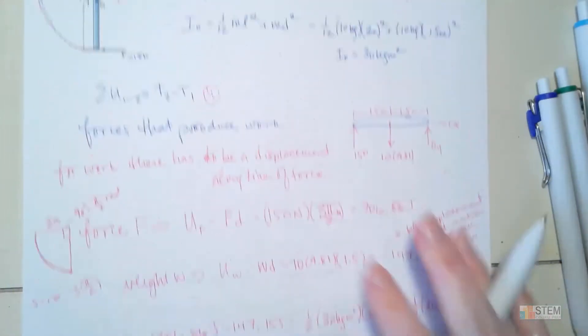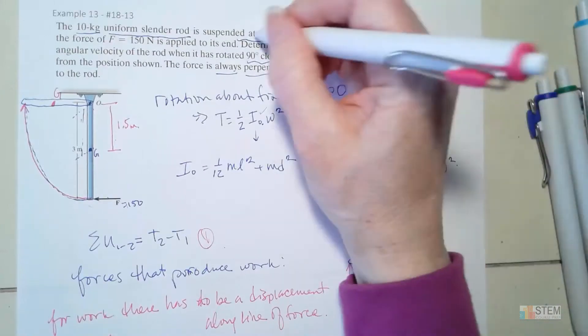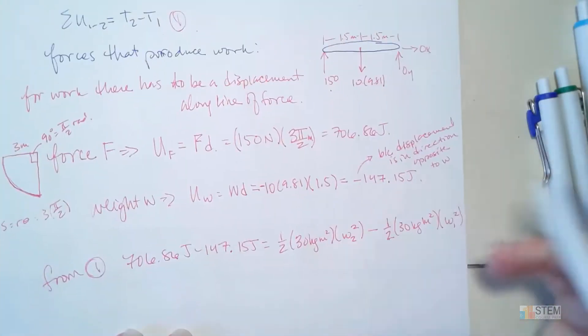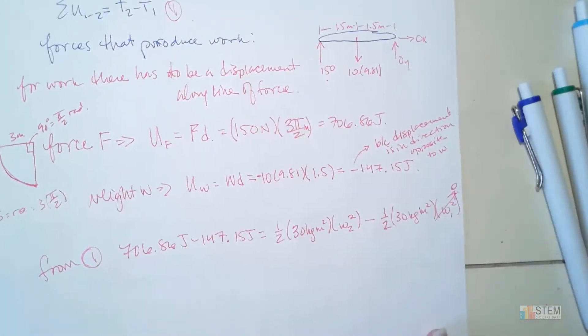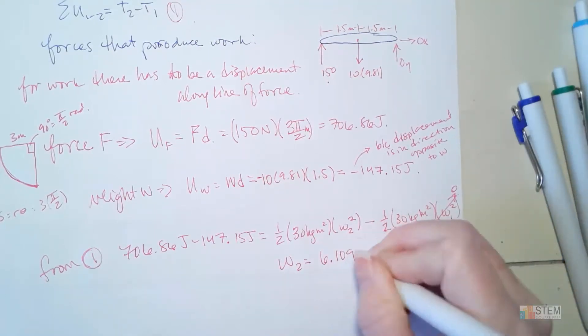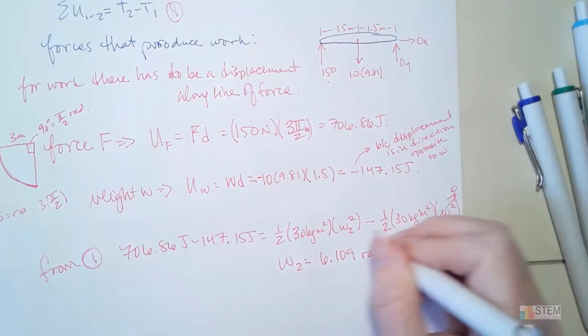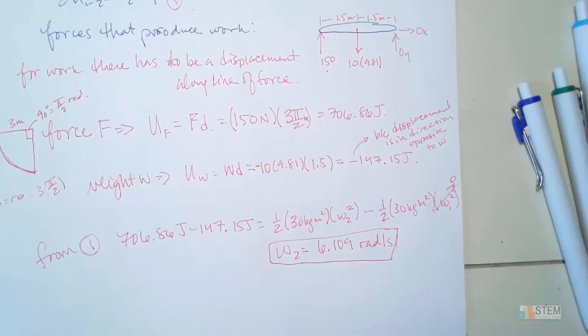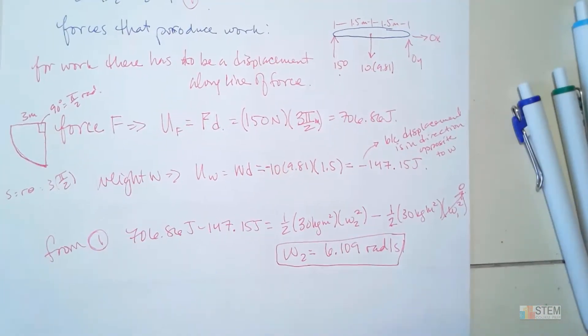Well, if we look up here, it says it was at rest initially. So if it's at rest, that means this goes to zero, leaving us with one unknown and this one equation. So omega_2 can be solved for, which is 6.109 radians per second. And that is our result.